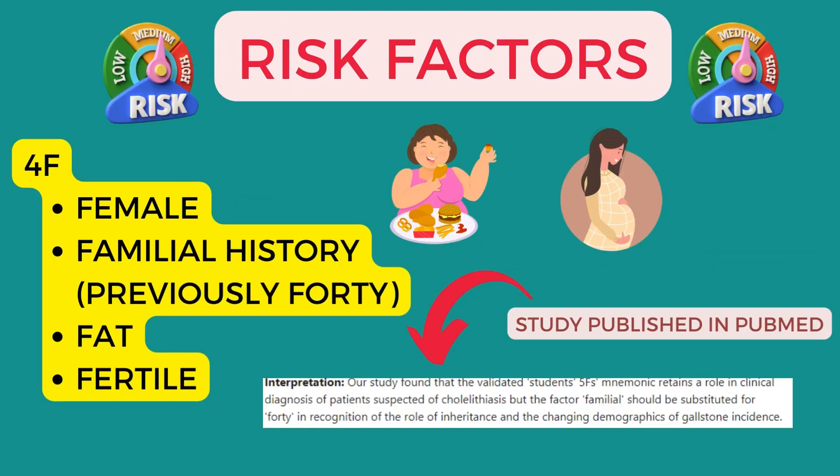The famous mnemonic for risk factors is the 4Fs: female, 40, fat, and fertile. However, according to a study published in PubMed, the F standing for '40' should be replaced by familial history, in recognition of the role of incidence and the changing demographics of gallstone disease.